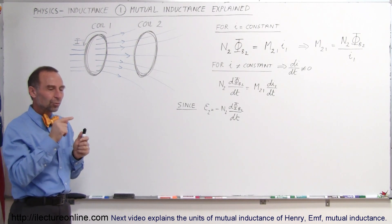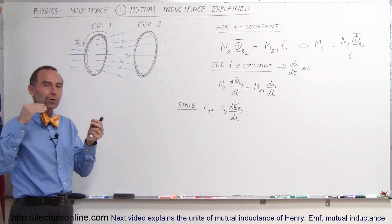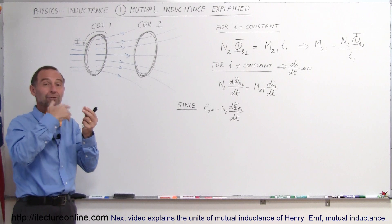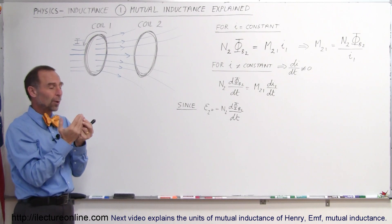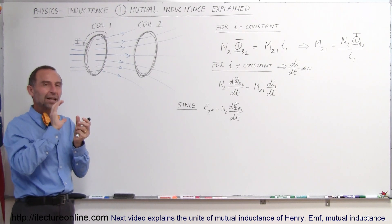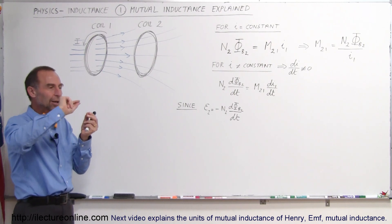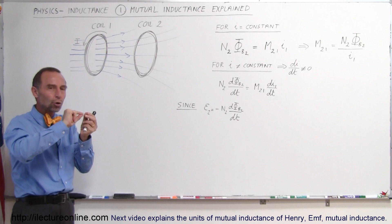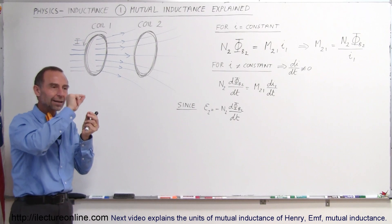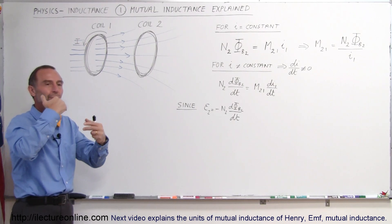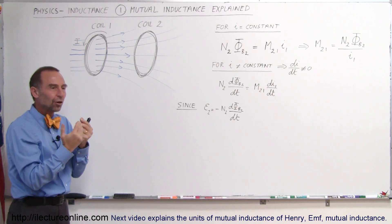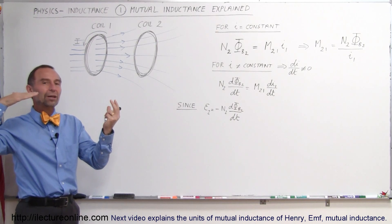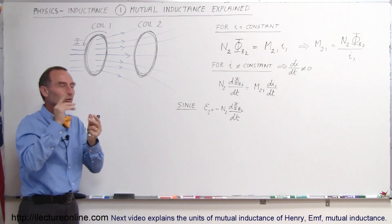When you put a current through a wire, a magnetic field forms around it. But when you take that wire and coil it, the magnetic field rearranges itself so that it goes right through the center of the coil.